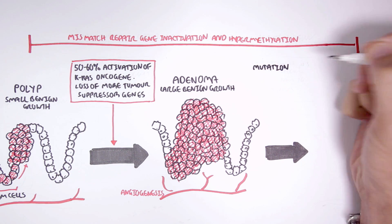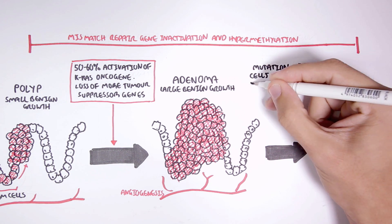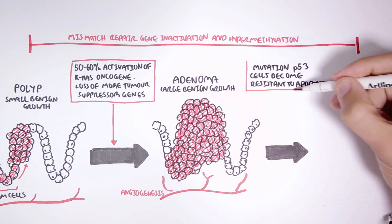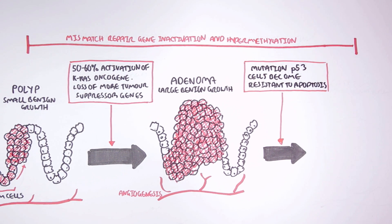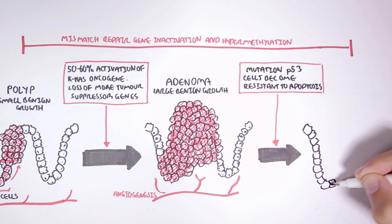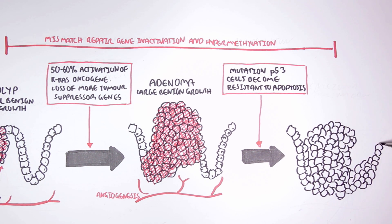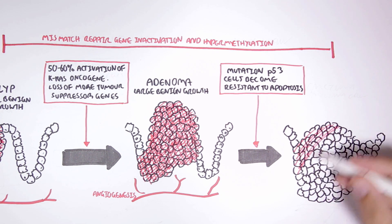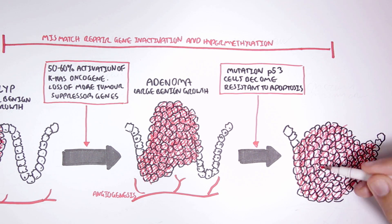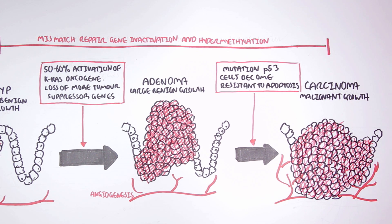A mutation in the TP53 gene tends to occur later in colon carcinogenesis. This mutation will cause resistance of cancer cells to apoptosis. So more cells will divide and less will die. This will cause a massive growth which will cave in and keep growing, resulting in carcinoma, which is a malignant growth.